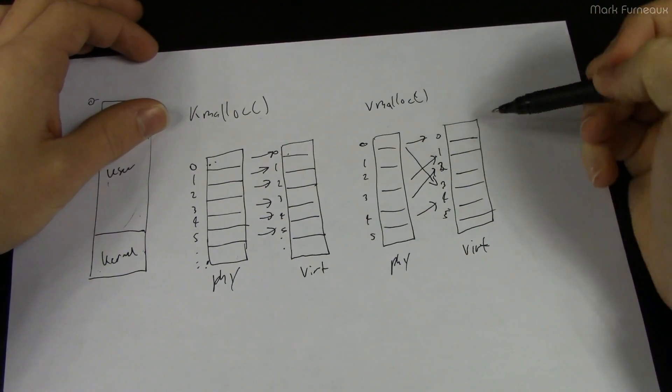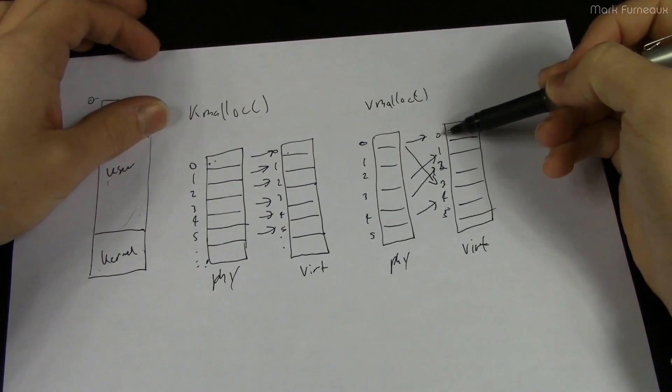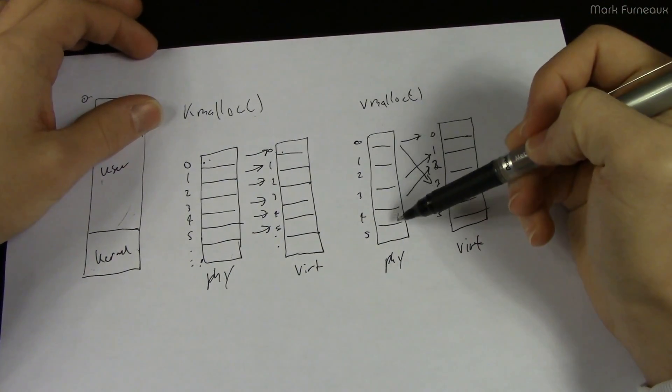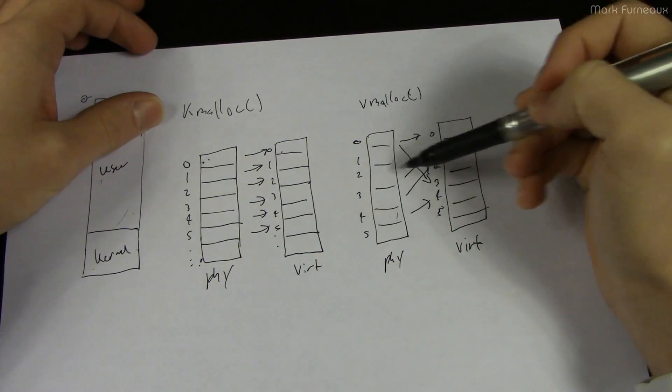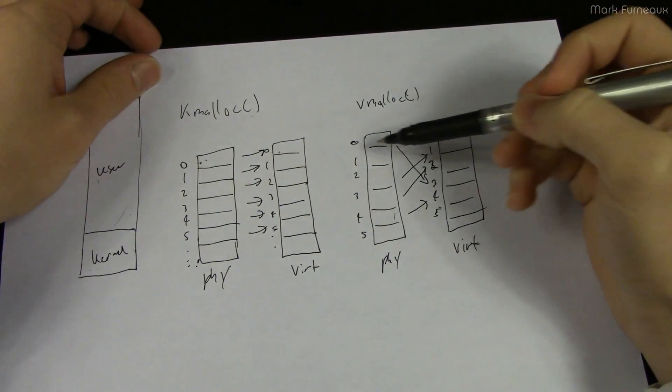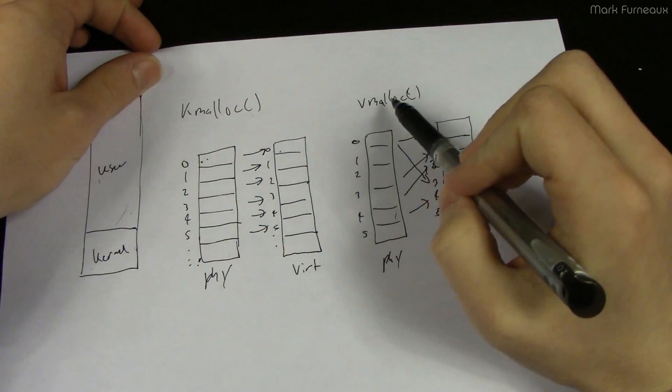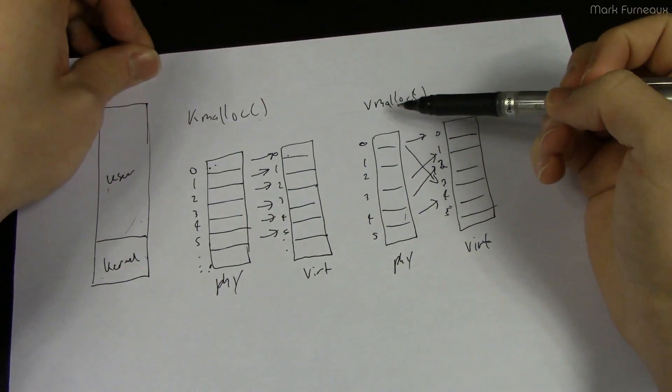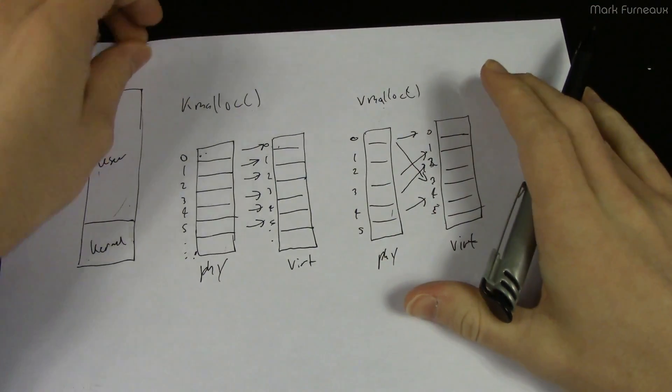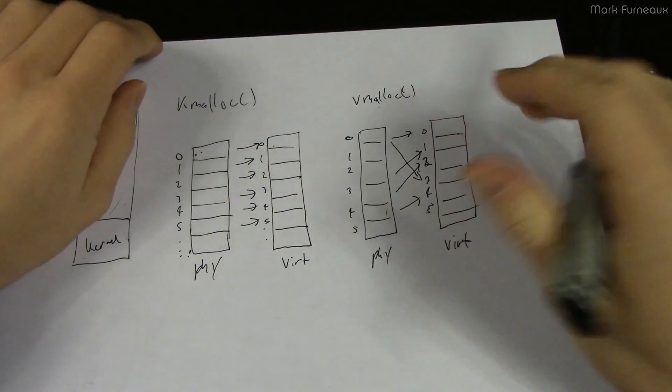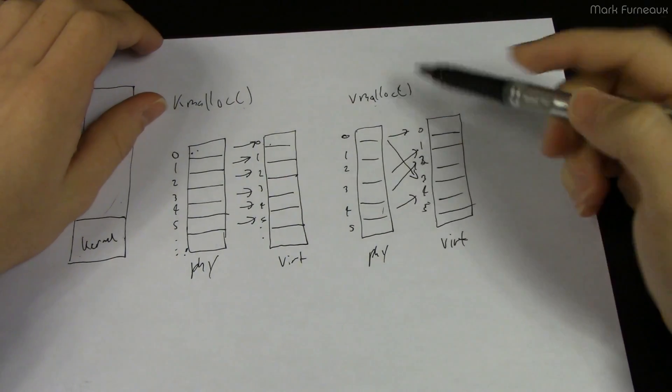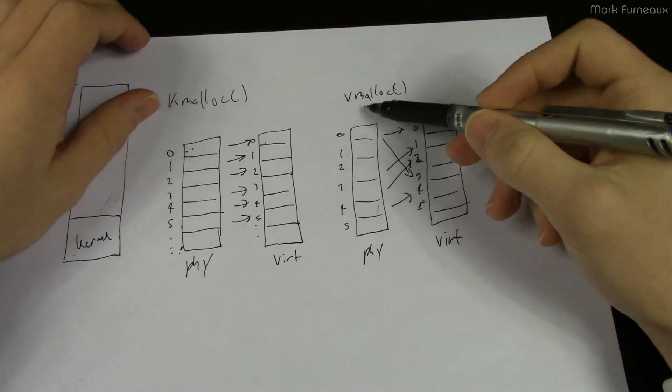So you can read memory contiguously in virtual address space but in physical address space there's no direct mapping between these. And of course this does not work with DMA. So you can't use vmalloc whenever you're using DMA. So basically drivers very rarely use this. But ZFS is kind of not really a driver, it's a file system and it doesn't need it to be contiguous so it's okay with using vmalloc.